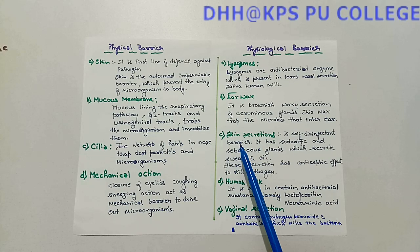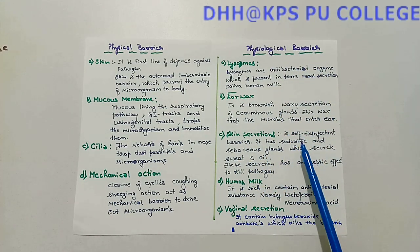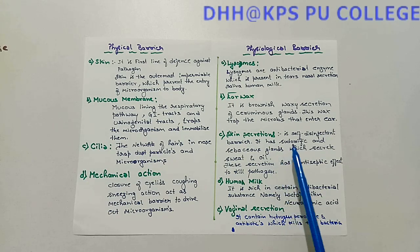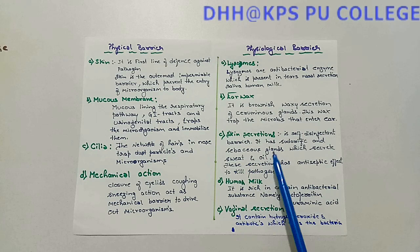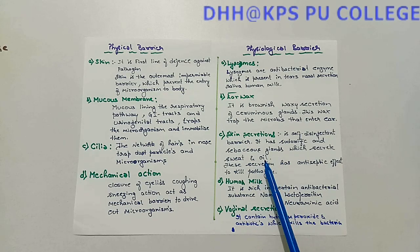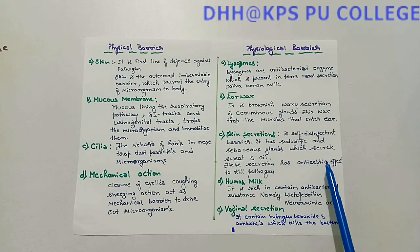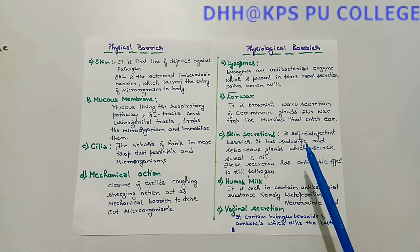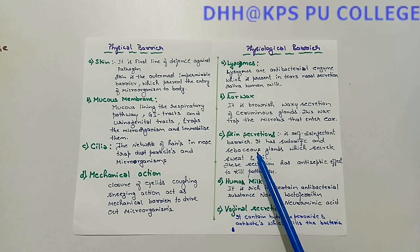Skin is also a physiological barrier because it is a self-disinfectant barrier. It contains two types of glands: sudorific glands, which secrete sweat, and sebaceous glands, which secrete oil. This sweat and oil have an antiseptic effect that kills pathogens.